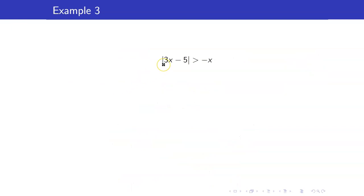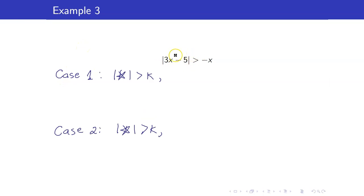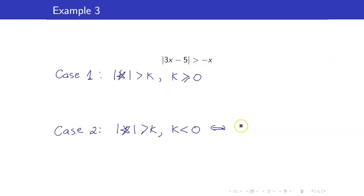For the next example: the absolute value of 3x minus 5 is greater than negative x. Notice that the expression without the absolute value sign is no longer a constant — it involves a variable. In this case, we separate it into two cases. The form is |★| > k, but since k involves a variable, we separate: Case 1, where the expression outside the absolute value sign is greater than or equal to 0; and Case 2, where it is negative.